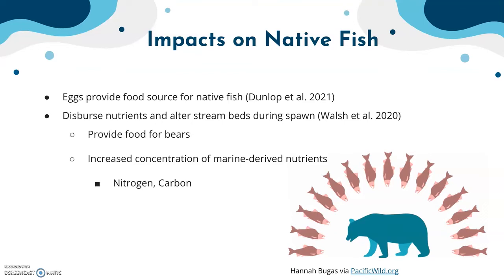Pacific salmon also disperse nutrients and alter streambeds during spawning, changing the morphology of rivers. They provide food for bears, though this is a catch-22, as they can also contain high levels of contaminants from bioaccumulation. They do increase the concentration of marine-derived nutrients — specifically nitrogen-15 and carbon-13, which are known to come from the ocean. These become elevated when Pacific salmon move into an area, as the salmon gather those nutrients in the ocean and bring them into new waterways when consumed.